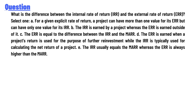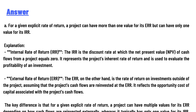Option C — the ERR is equal to the difference between the IRR and the MARR. Option D — the ERR is earned when a project's return is used for the purpose of further reinvestment, while the IRR is typically used for calculating the net return of a project. The IRR usually equals the MARR whereas the ERR is always higher than MARR.